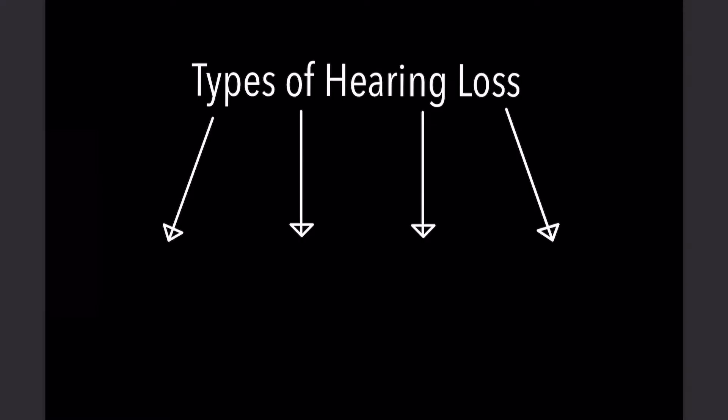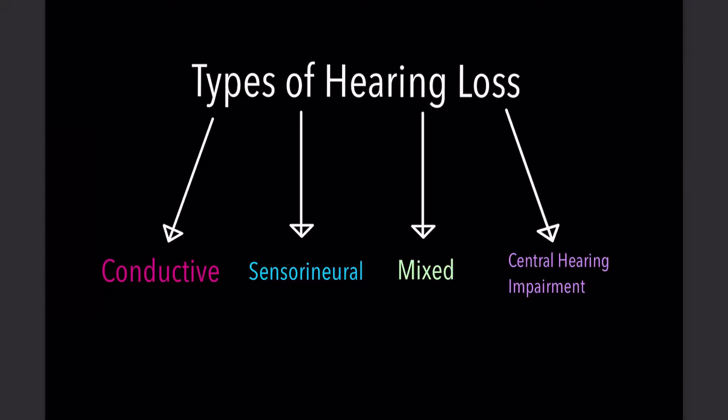There are four main types of hearing loss: conductive, sensorineural, mixed, and central hearing impairment.